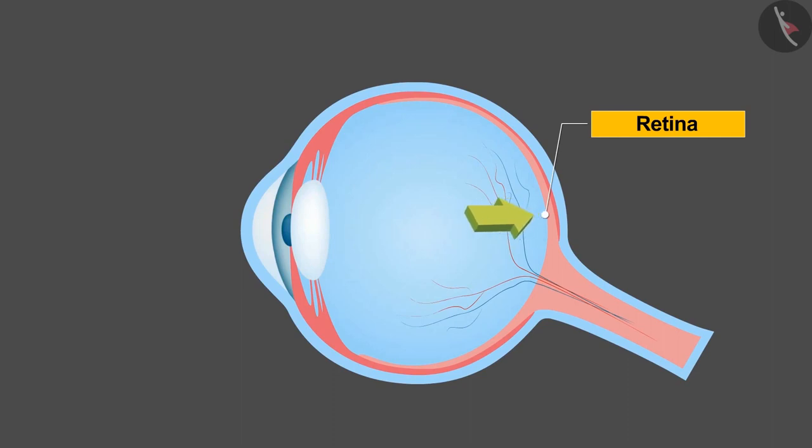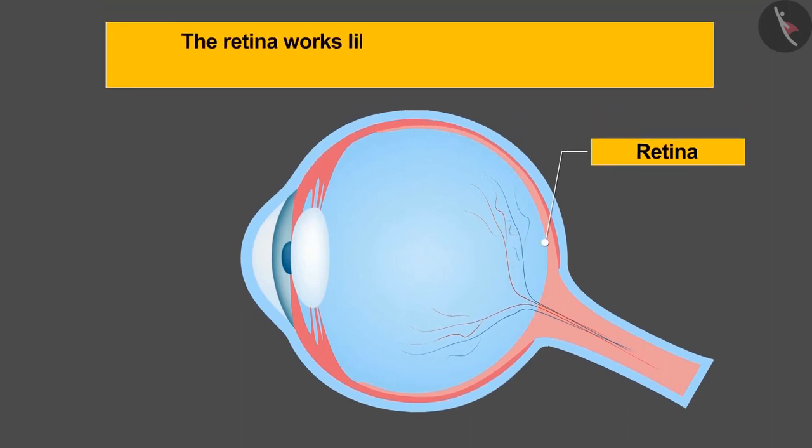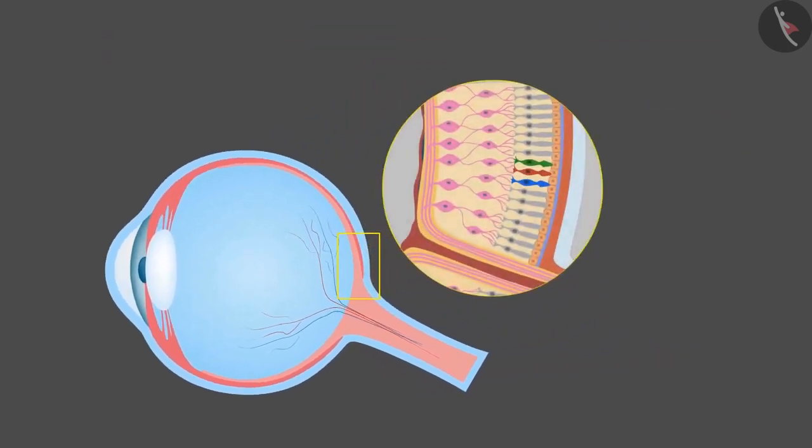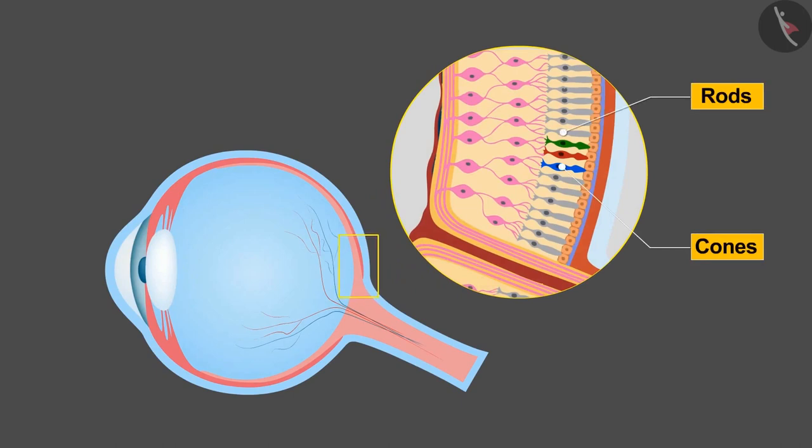This surface of the eye is called retina. The retina works like a film in the eyes on which images of the objects are formed. Retina has two special types of cells: cones and rods, which become alive when the light falls on it.